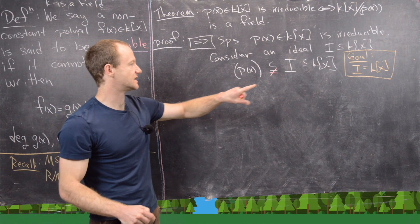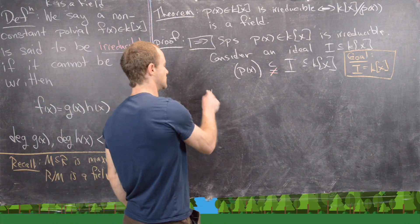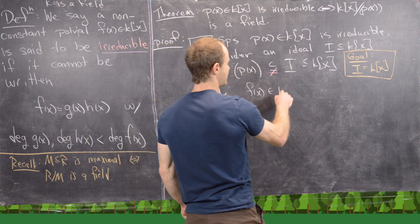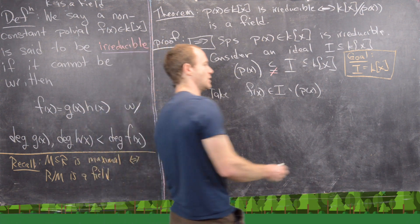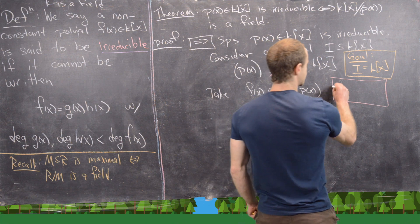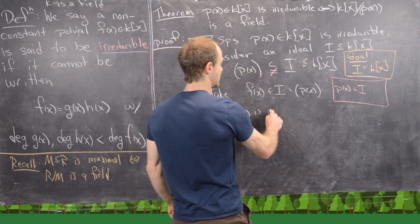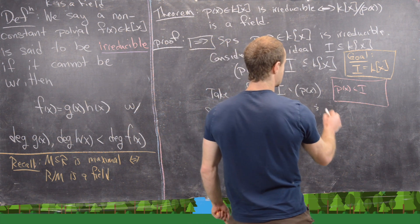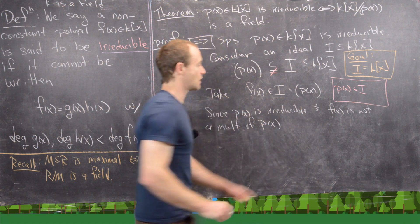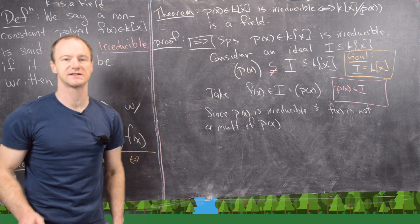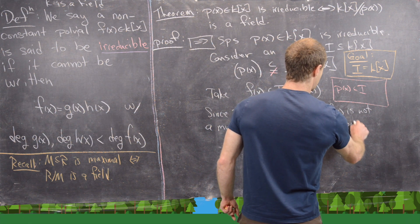If the principal ideal is not equal to our ideal I, that means there's a polynomial in I that's not inside (p(x)). Let's take that polynomial f(x), which is inside I but not inside the ideal generated by p(x). Note that p(x) itself is inside I by this inclusion. Since p(x) is irreducible and f(x) is not a multiple of p(x) — if it were, it would be in the principal ideal — the polynomial GCD of f(x) and p(x) equals 1.